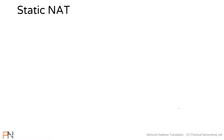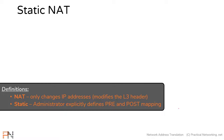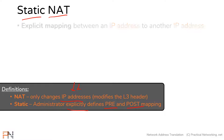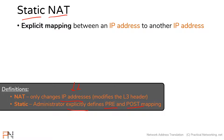If we pull up our definitions from the NAT terminology lesson, we know that a NAT is a modification of just the IP address, and a static translation is an explicit mapping between the pre-translation IP address and the post-translation IP address. If we combine those, we get a definition for static NAT as an explicit mapping between a pre-translation IP address and a post-translation IP address.